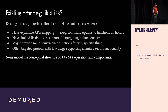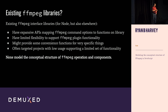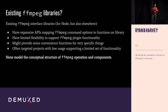We looked at a bunch of existing FFmpeg libraries — this started about a year ago. We looked at Node and other languages as well. What we found is that a lot of libraries either have very expansive APIs that map individual FFmpeg options to functions, or they have a limited specific focus with limited flexibility to support plug-in functionality. They're often very targeted projects with low usage focused on that specific use case, and they don't support much outside of it.